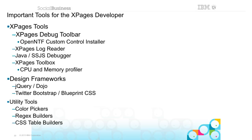The XPages Toolbox from Philip Riond on OpenNTF can show you how fast your code is performing and where the bottlenecks are. We've talked about design frameworks — pick one and use it. If you want to use Dojo for as much as you can, great. If you want a little more eye candy, get some comfort zone with jQuery. Twitter Bootstrap looks like a wonderful framework — they're using it on CollaborationToday.info. I used to talk about Blueprint CSS, but I think that's dying in favor of Twitter Bootstrap.